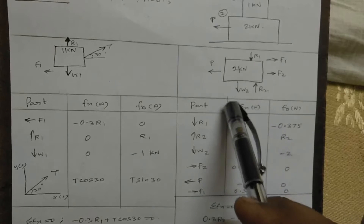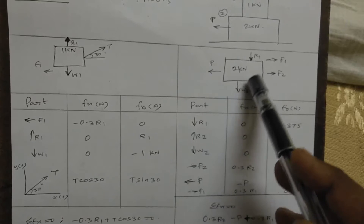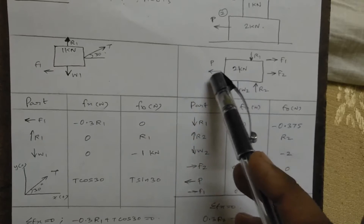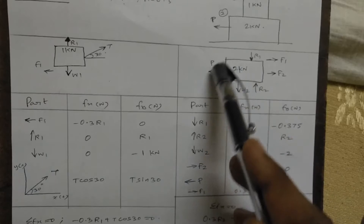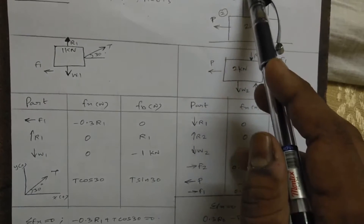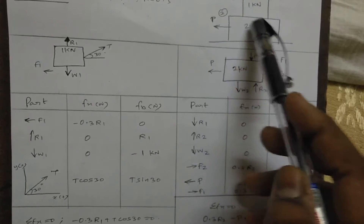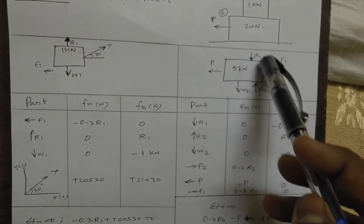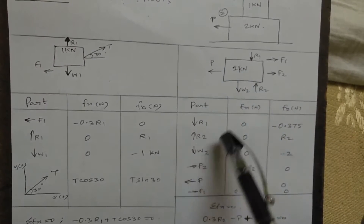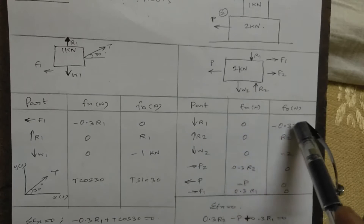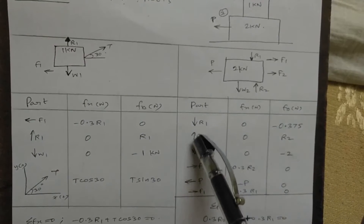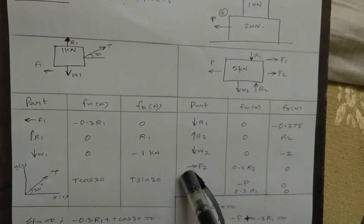Now moving to the second block: 2 kilo newton. The load is always going downward, and the support reaction R2 is always going upward. Capital P is the applied horizontal force. F2 is the friction force. The tension T from the first block connects to this block, and R1 acts downward on R2. So R2 carries the combined effect.